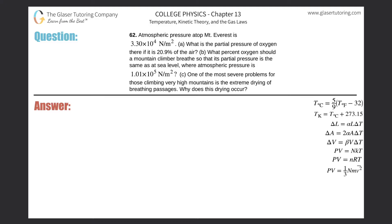Number 62: atmospheric pressure atop Mount Everest is 3.3 times 10 to the 4 newtons per meter squared. Part A: what is the partial pressure of oxygen there if it is 20.9 percent of the air?